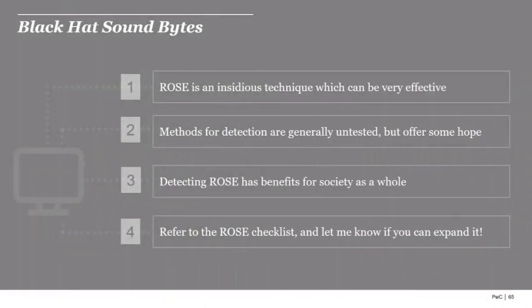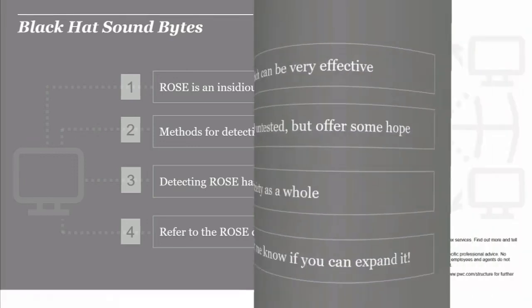Some key takeaways: ROSE is a pretty insidious technique, still fairly uncommon with only a handful of case studies out there. It can be very effective and does require patience and perseverance from the attacker, but depending on the approach it's not necessarily that resource-intensive. The methods for detecting ROSE attacks are generally untested and experimental — predominantly used in academic contexts — but they offer some promise and need further work in real-world application. Detecting ROSE attacks potentially has societal benefits beyond just protecting organizations' networks. Please do have a look at the ROSE checklist, and let me know if there are things that should be added or modified.